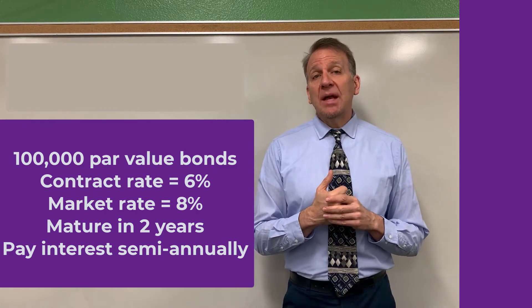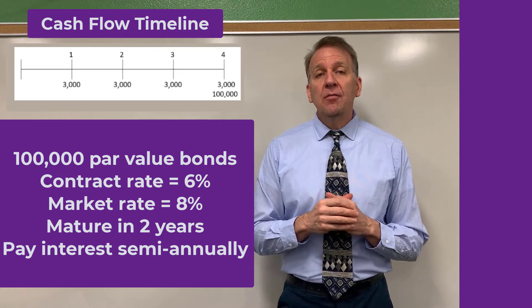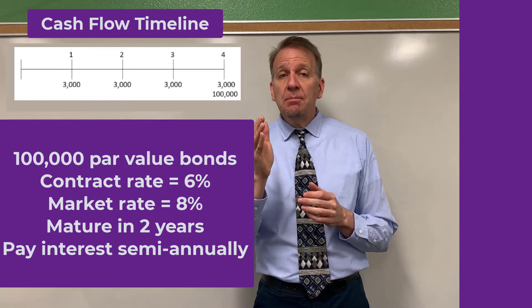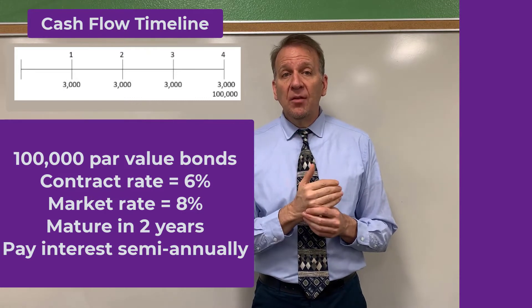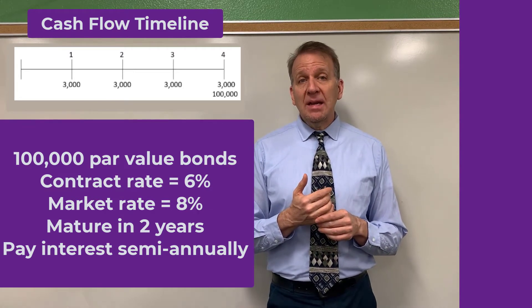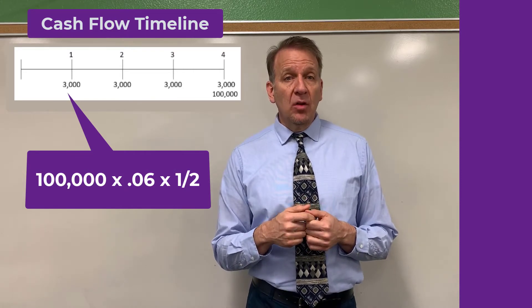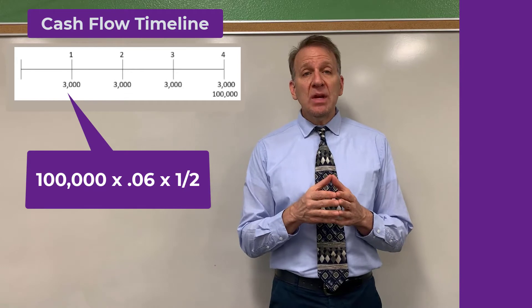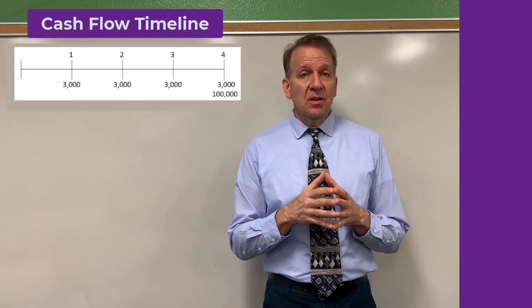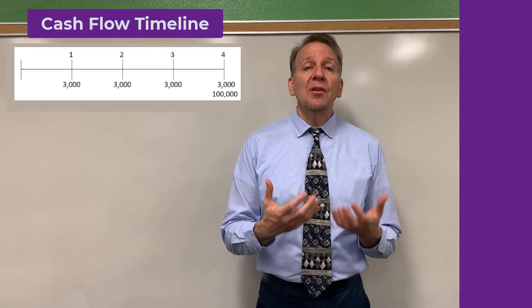We need to look at the timeline on the side. This timeline shows how the cash payments are going to look over the four periods. This bond is just a two-year bond, and there are four periods because they're going to be paying out the cash for the interest every six months. The contract rate is 6%, so we can take 6% times the $100,000 bond and we'll get $6,000 — but that's for a full year. For six months, it's only going to be $3,000. That's why you see the $3,000 there four times. And at the end of the bond's life, after the two years, they're going to pay back the $100,000.